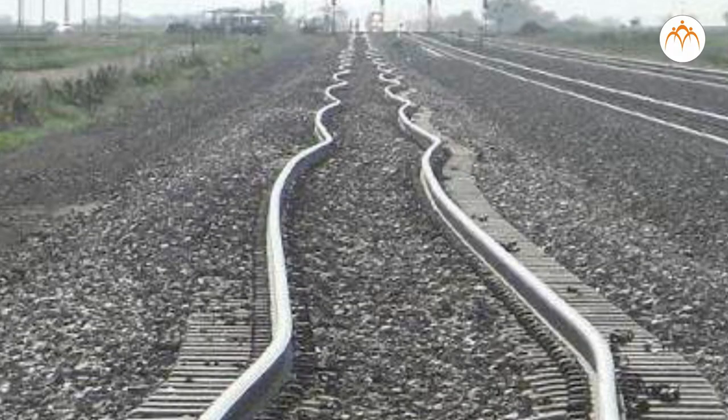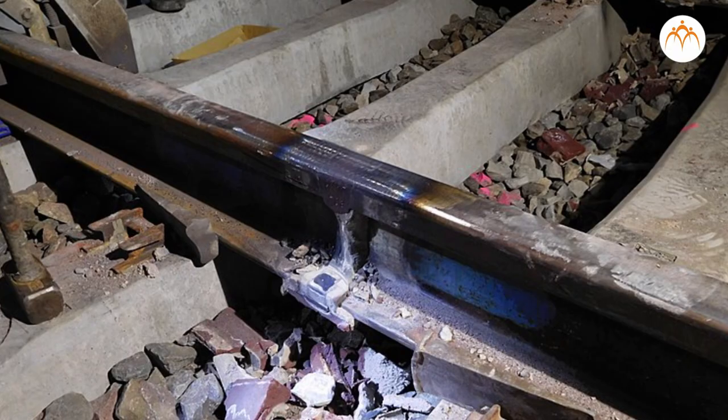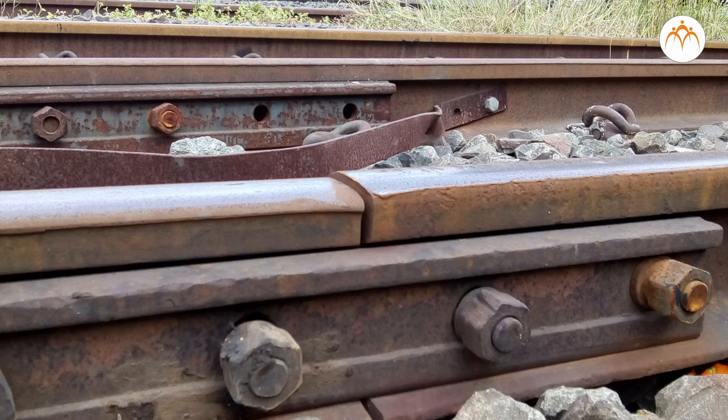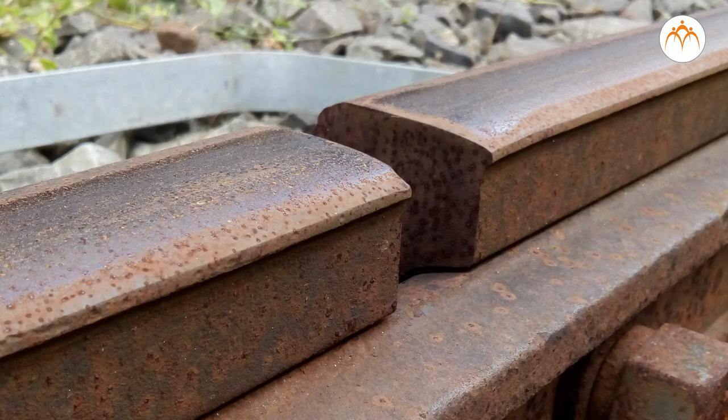Without these gaps, rails will bend. But nowadays, gaps are filled with some special material. This is the reason why rail tracks used to have gaps earlier.